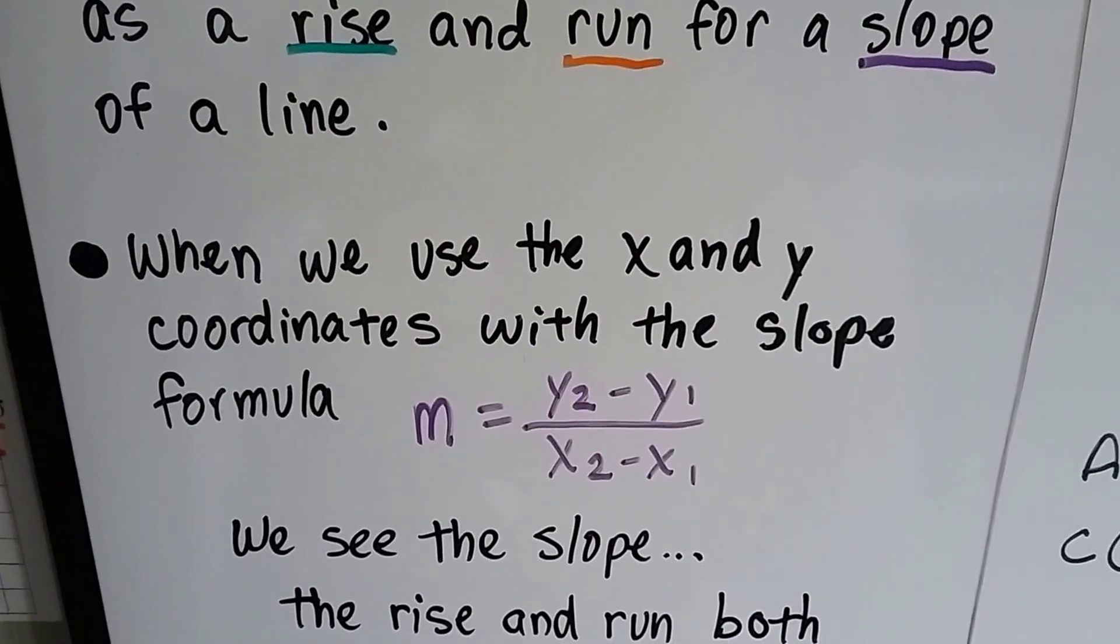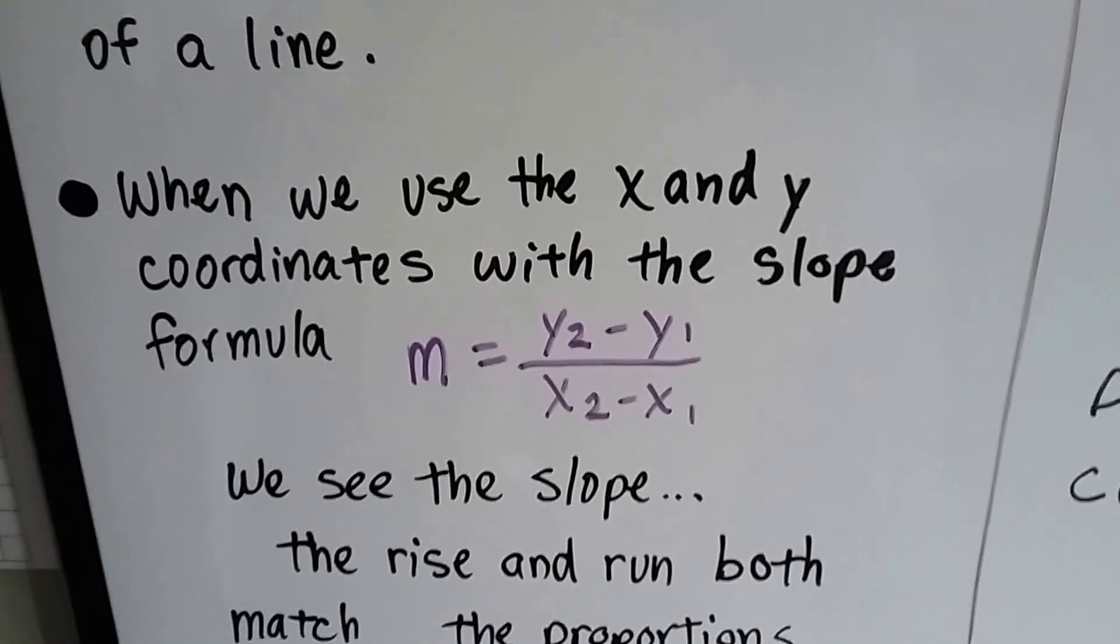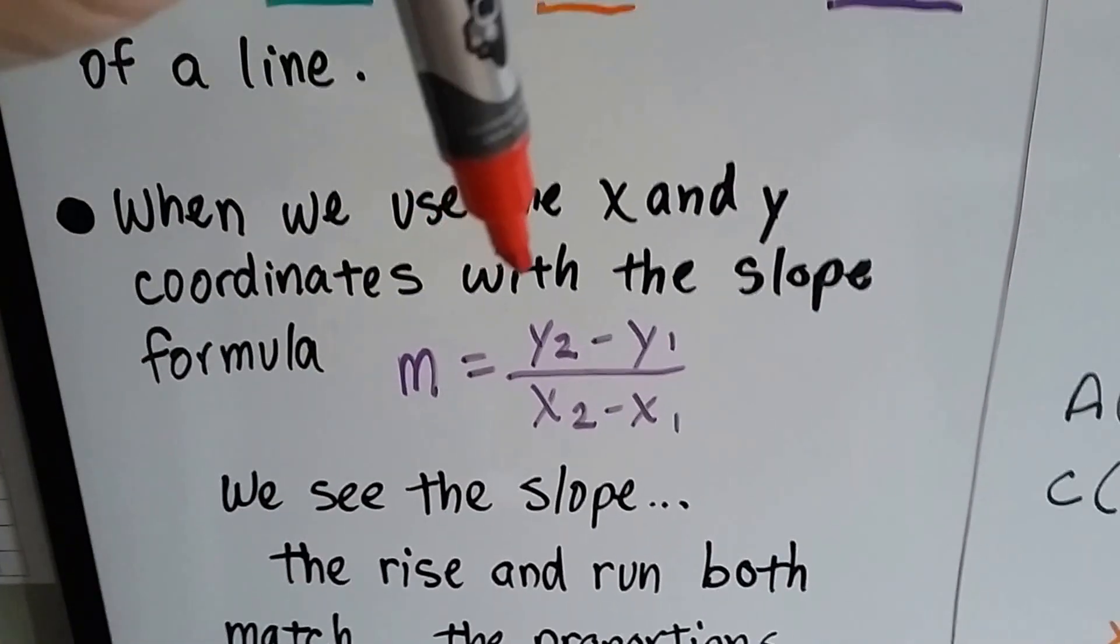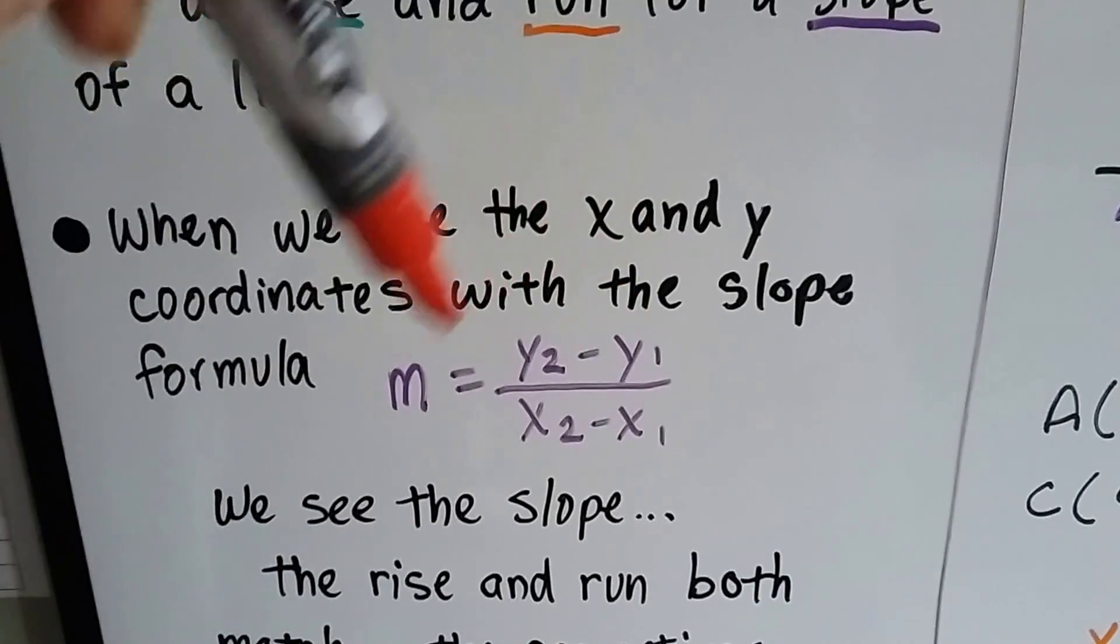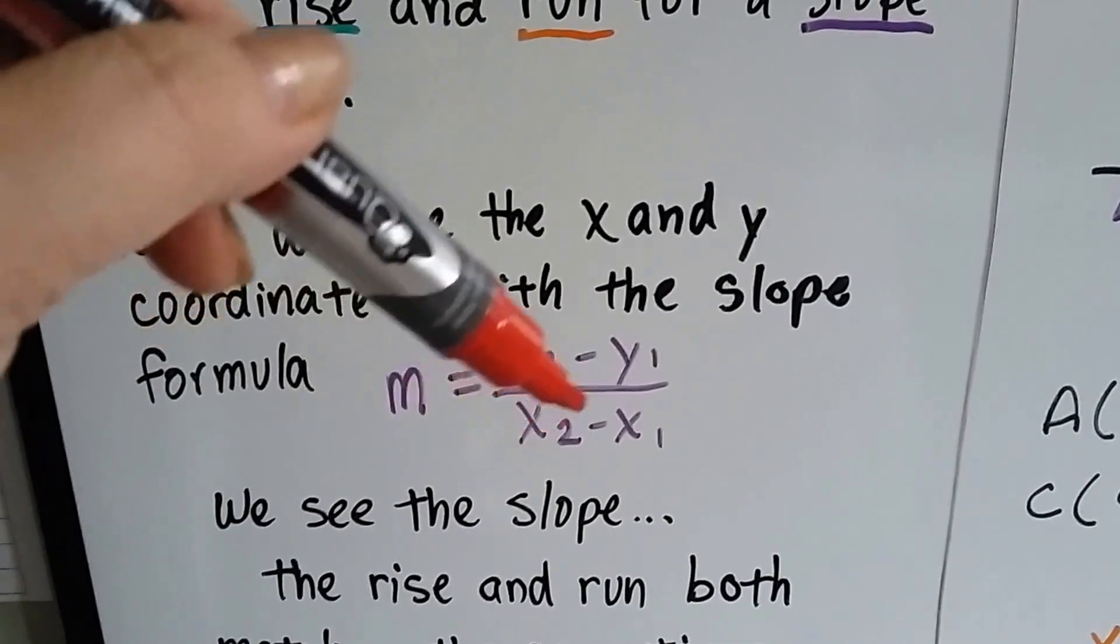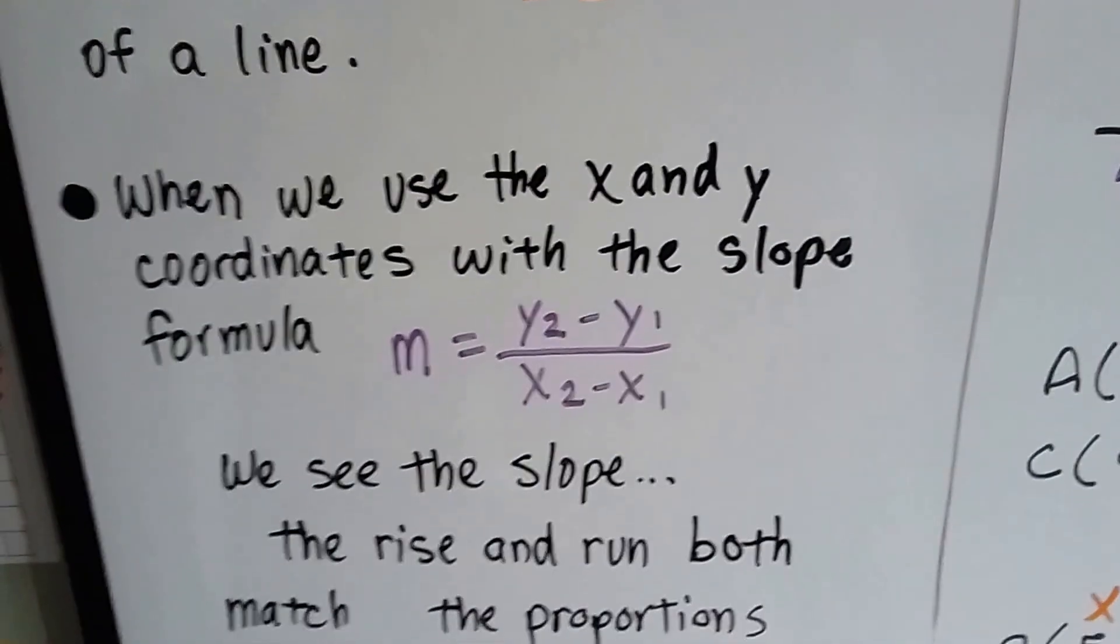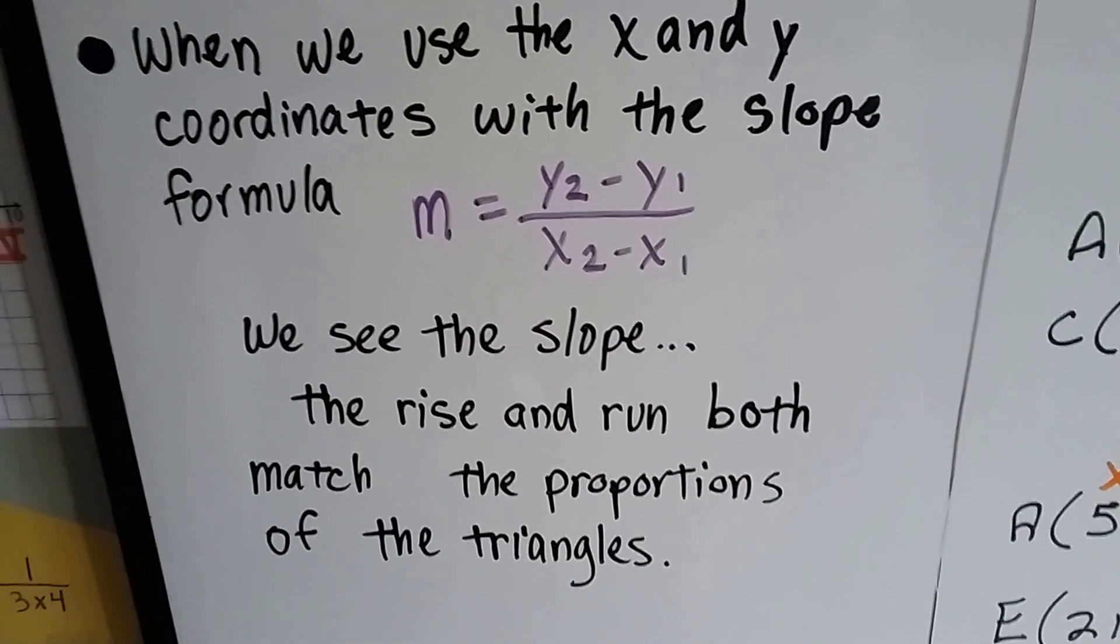When we use the x and y coordinates with the slope formula, you remember this from the beginning of the school year, m is the slope, and it equals the second y-coordinate take away the first y-coordinate over, like a fraction, the second x-coordinate take away the first x-coordinate. And we see the slope, the rise and the run, both match the proportions of the triangles.